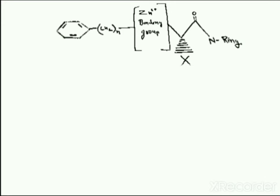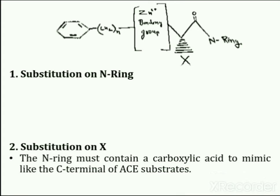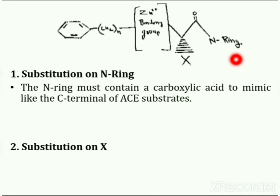Now we will learn substitution possibilities on this basic skeleton. First is substitution on the N-ring. Angiotensin converting enzyme contains two ends which are named as C and N terminal. The N-ring must contain a carboxylic acid to mimic the C-terminal of ACE substrates. Large hydrophobic heterocyclic rings in the N-ring increase the potency and alter the pharmacokinetic parameters.